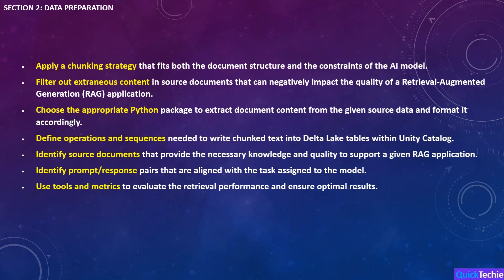In Section 2, we'll focus on data preparation, a key part of generative AI. You'll first learn to apply a chunking strategy, breaking down documents into manageable parts that fit both the structure and constraints of the AI model. Then, you'll learn to filter out extraneous content, ensuring only relevant, high-quality data is used in RAG applications. Next, you'll select the right Python package to extract content and format it correctly. You'll also define how to store chunked text in Delta Lake tables within Unity Catalog for organized access. Identifying the right source documents and prompt-response pairs is crucial, and you'll learn how to evaluate retrieval performance using tools and metrics.